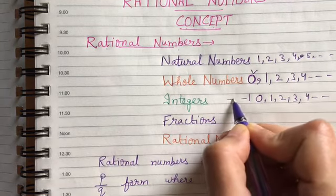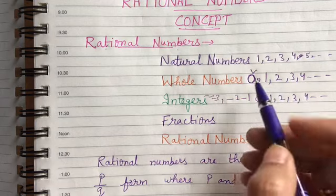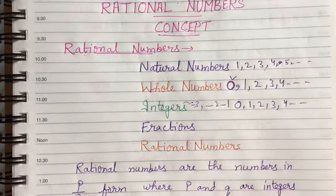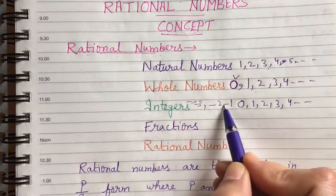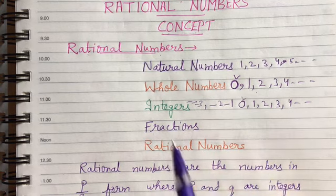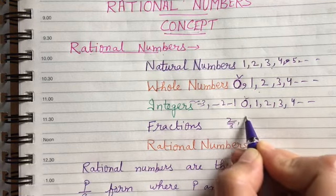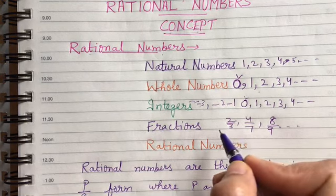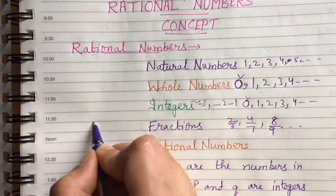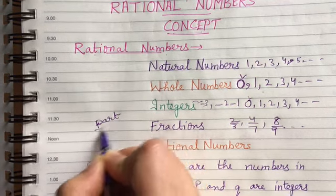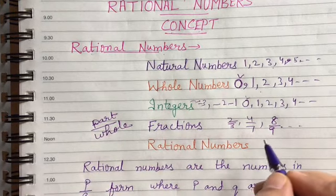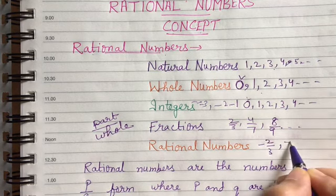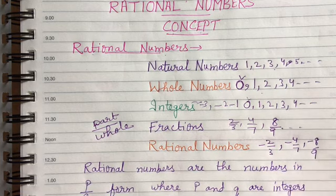Now in whole numbers we have another thing missing — negative numbers. We have temperature and different quantities that also involve negative numbers. So, natural numbers are all the counting numbers; including 0 they are whole numbers; and all the positive and negative whole numbers including 0 are integers. After that, we have numbers like 2 by 3, 4 by 7, 8 by 9 — these are called fractions, in which you are dividing the whole into parts. In life we also come across numbers like minus 2 by 3, minus 4 by 7, minus 8 by 9.